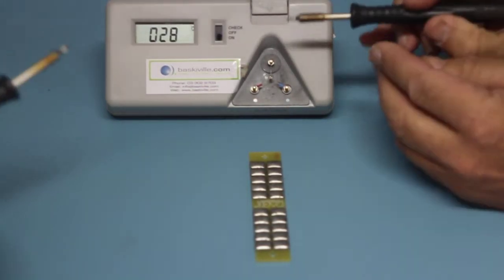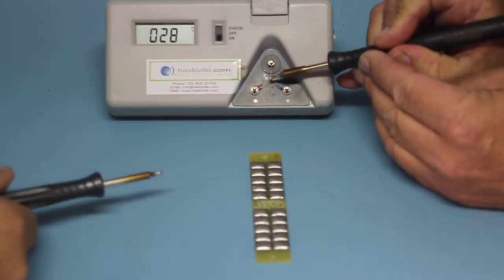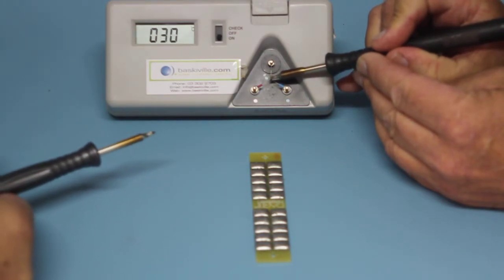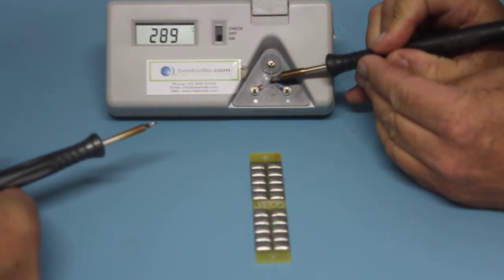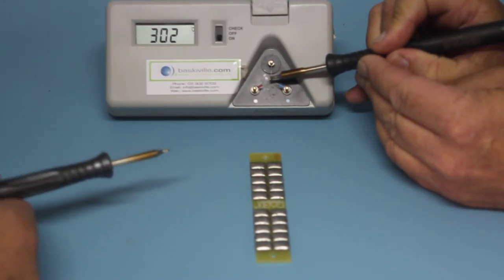Hi, it's Ian from basicworld.com. We're here today to check the performance and compare the TD100 handpiece with a 19 tip (sixteenths chisel) with the Pace ST50 and the WJS100. The ST50 is a 60-watt machine, WJS is 120 watts.